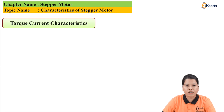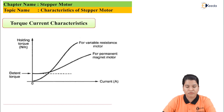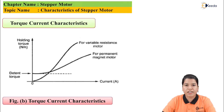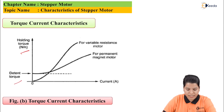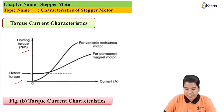Next is the torque-current characteristic. The figure shows the torque-current characteristic. It is basically the characteristic of torque versus current. Here there are two torques — first is holding torque and second is detent torque. As we can see, the torque increases with the value of current.